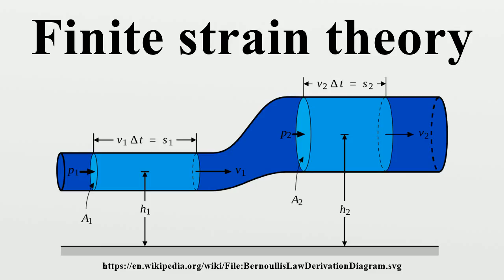Let x be a Cartesian coordinate system defined on the undeformed body and let y be another system defined on the deformed body. Let a curve in the undeformed body be parametrized, then its image in the deformed body is given. The undeformed length of the curve is given by a line integral; after deformation the length becomes a different integral. Note that the right Cauchy-Green deformation tensor C is defined as F^T F. Hence changes in length are characterized by this tensor, and the concept of strain is used to evaluate how much a given displacement differs locally from a rigid body displacement. One such strain for large deformations is the Lagrangian finite strain tensor.